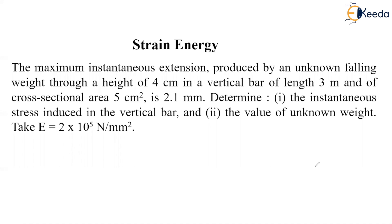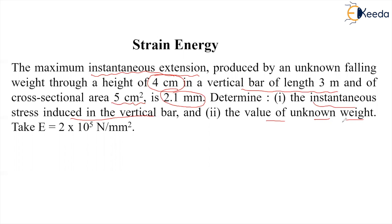The instantaneous deflection or extension is given as 2.1 mm, the length of the vertical bar is 3 m, area is 5 cm², and the height through which the weight falls is 4 cm. We have to find the instantaneous stress induced in the vertical bar and the value of the unknown weight — how much is the quantity of weight which falls from a height of 4 cm. So let us solve this problem.